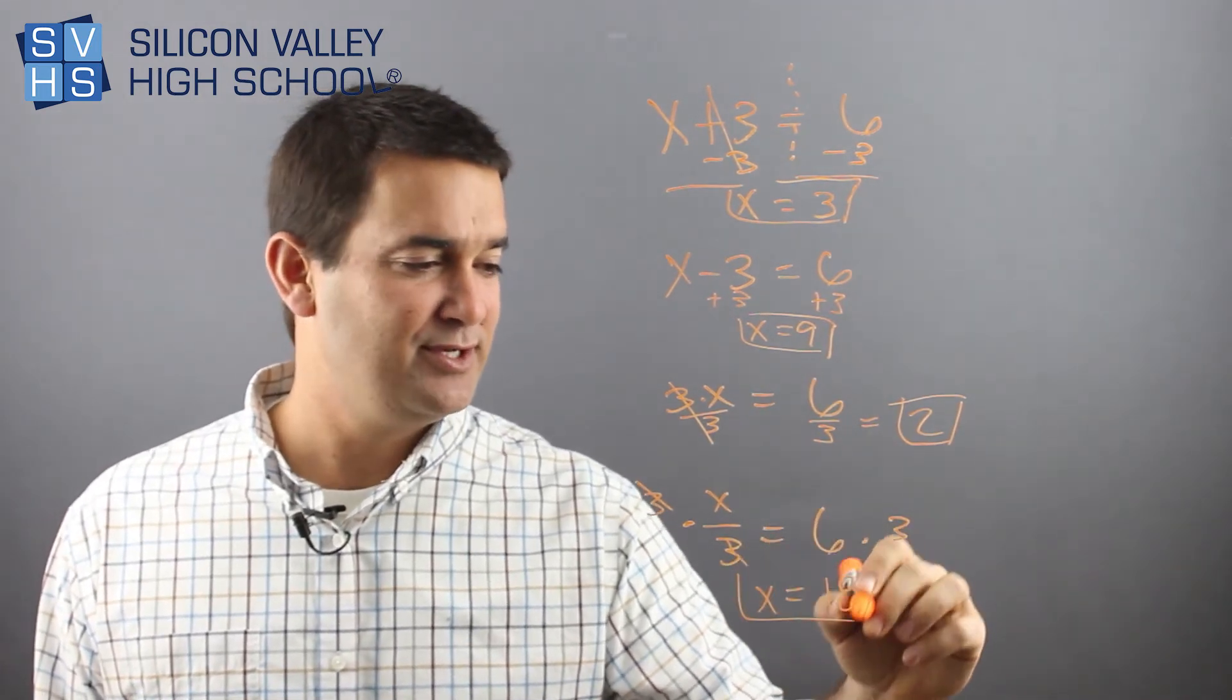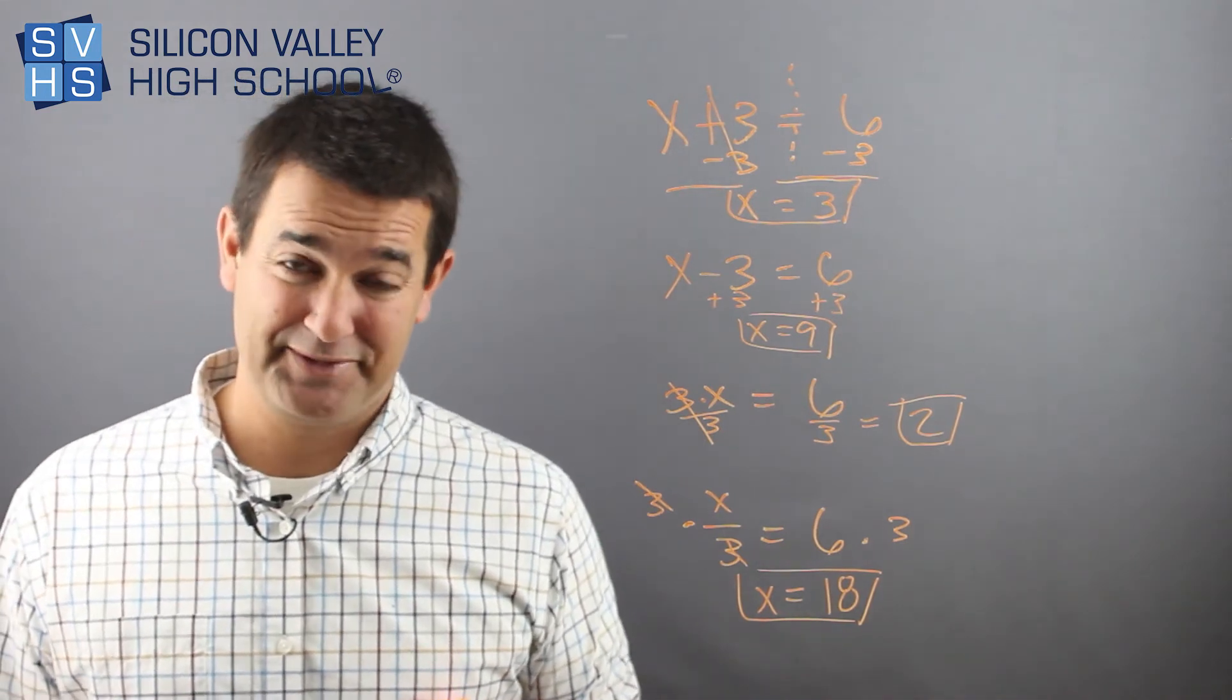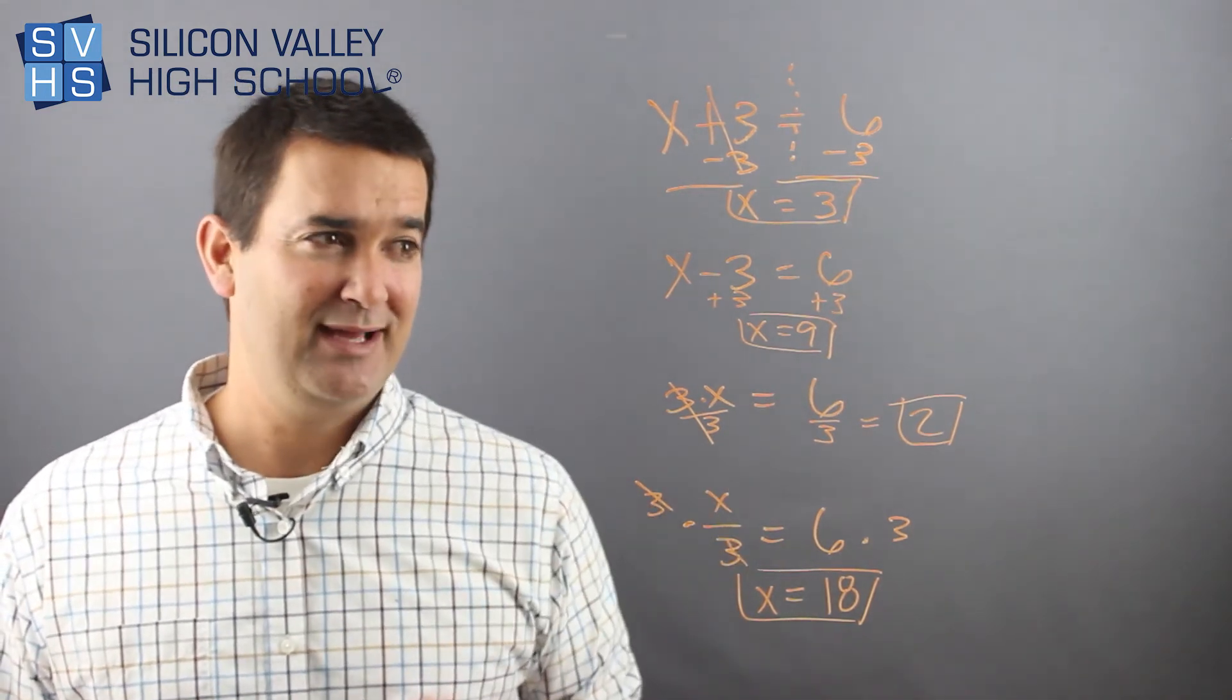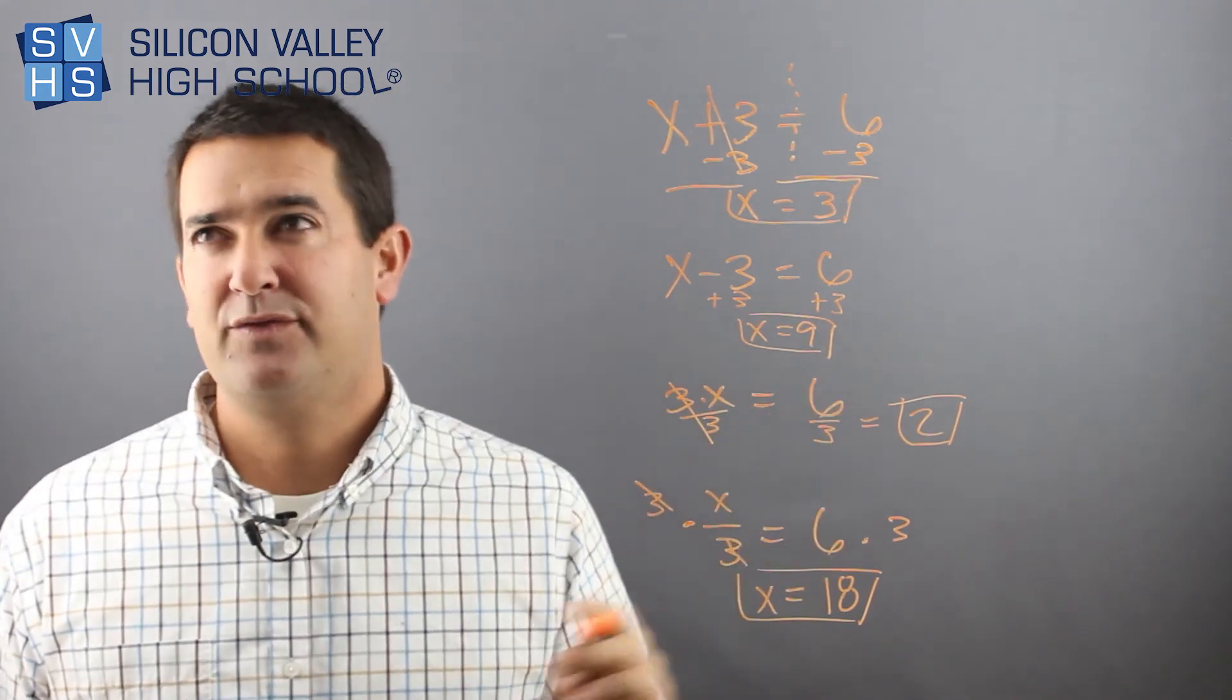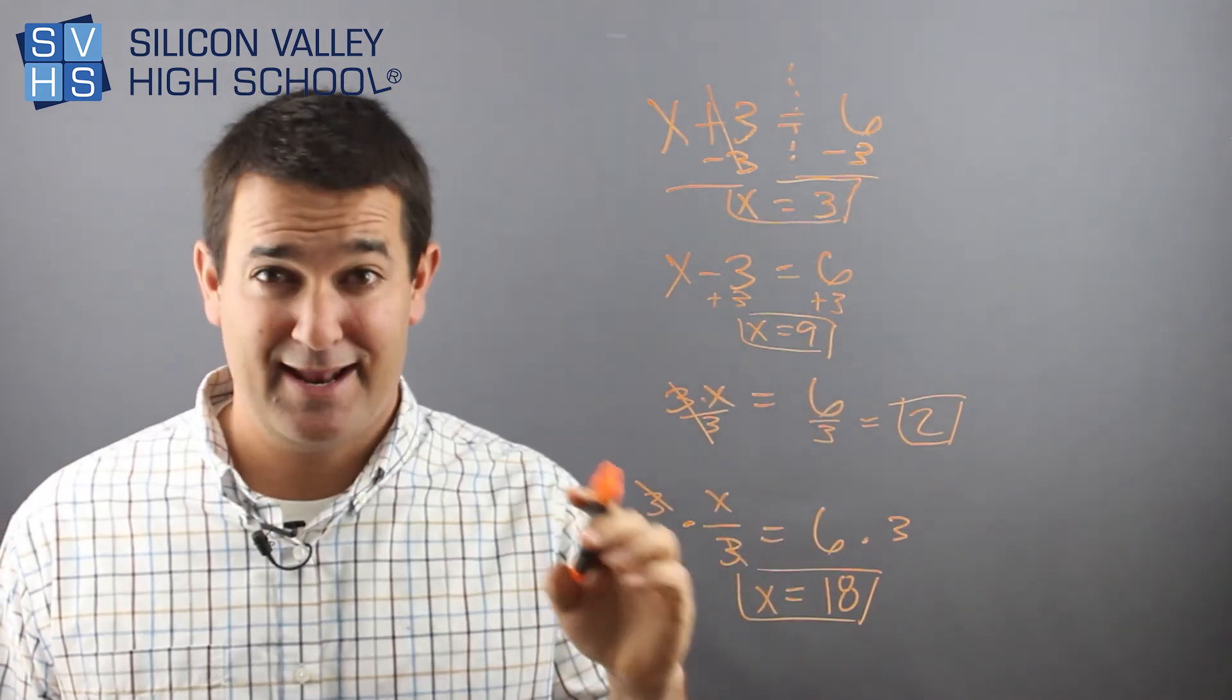What I don't think you should do—my pet peeve—is kids that are really smart want to just do it in their head. In this case, they say three x equals six and they'll be like three times what is six and they'll figure it out.